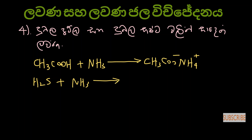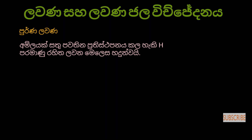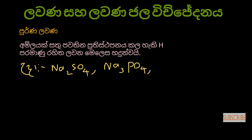Ammonium sulphide is involved here. After the reaction, we are talking about nitrogen compounds. This is a great question. The threshold of sodium sulfur — this is called sodium phosphate.